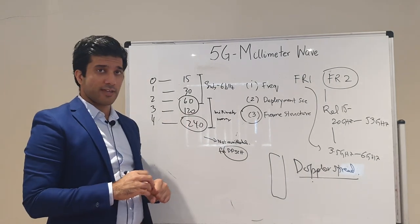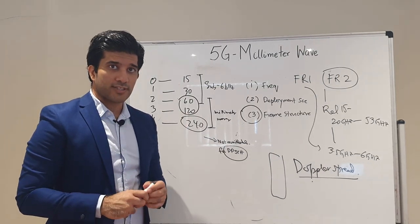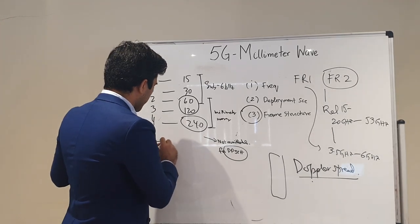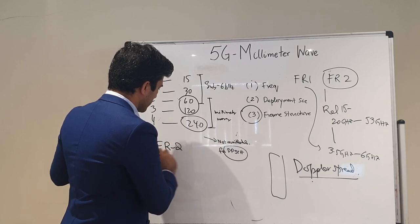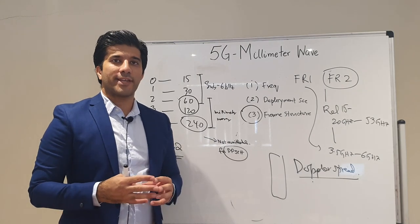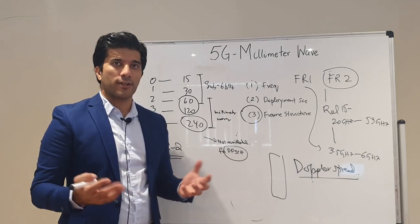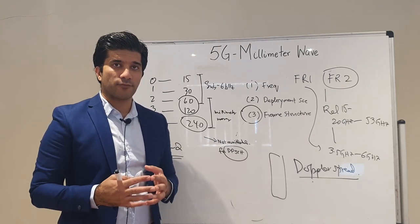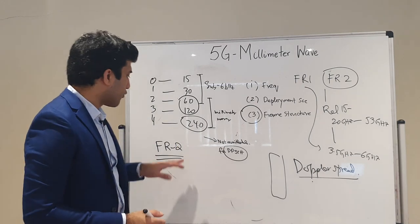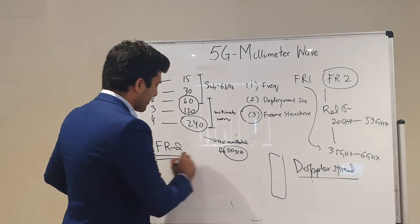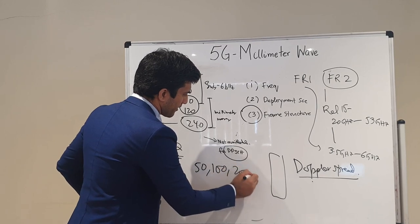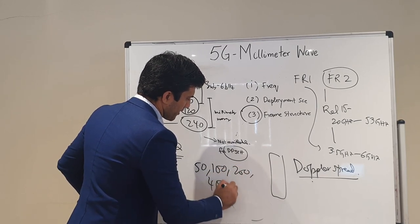Millimeter wave can operate at 60, 120, and 240 kHz sub-carrier spacing. However, 240 kHz is not available for the Physical Downlink Shared Channel (PDSCH), so major millimeter wave deployments will use 60 and 120 kHz. For carrier bandwidth in FR2, compared to LTE's options of 1.4, 3, 5, 10, 15, and 20 MHz, millimeter wave supports carrier bandwidths of 50, 100, 200, and 400 MHz.